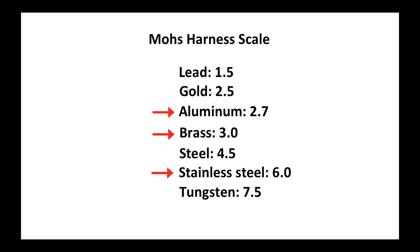But if we look at this Mohs hardness scale, we see that stainless steel toward the bottom has a relative hardness scale of 6.0 compared to either aluminum at 2.7 or brass at 3.0. So stainless steel is harder than either of the materials commonly used in nipples.